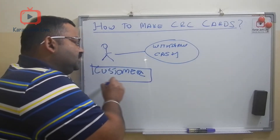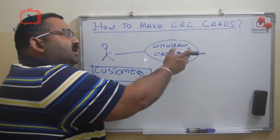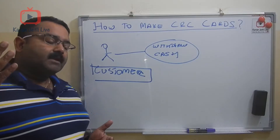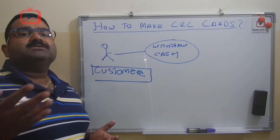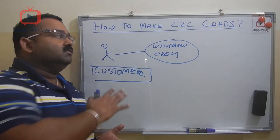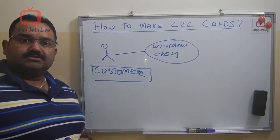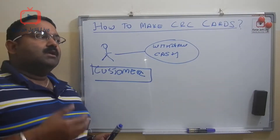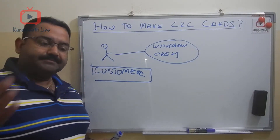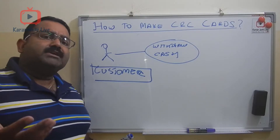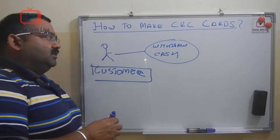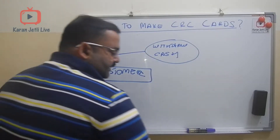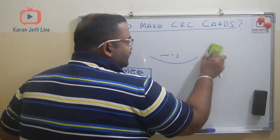So we have a customer in a bank and the use case associated with the customer is to withdraw cash. We will make a CRC card for this use case, trying to identify the basic classes, their responsibilities, and to which other classes they are collaborating.